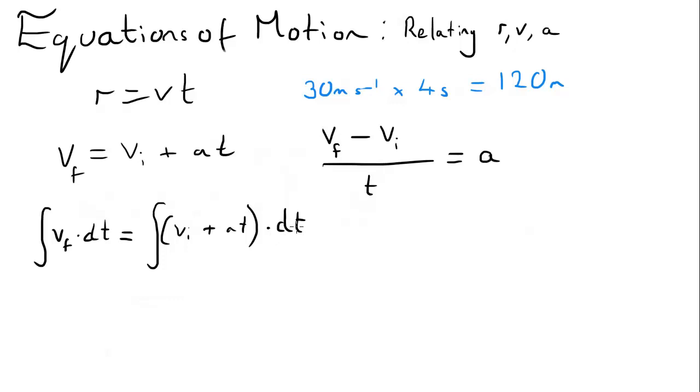Now, another way of writing my velocity is as a function of distance. So I'm just going to rub this bit out and write this as a function of distance, which is dr by dt. Now, you may have noticed that I can cancel out the dt's.